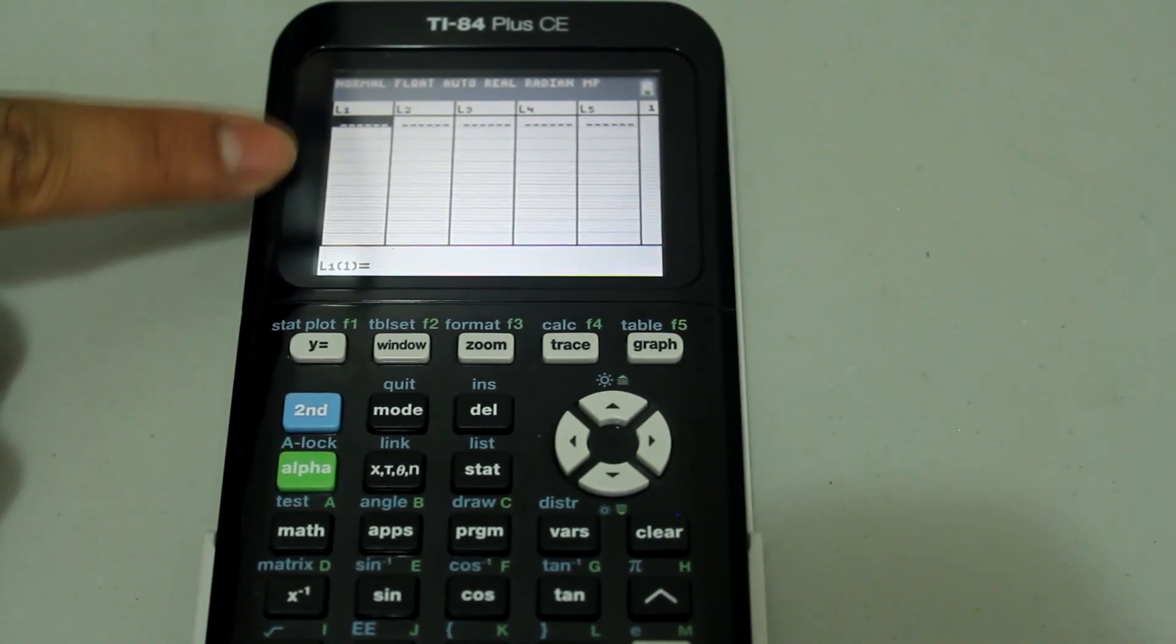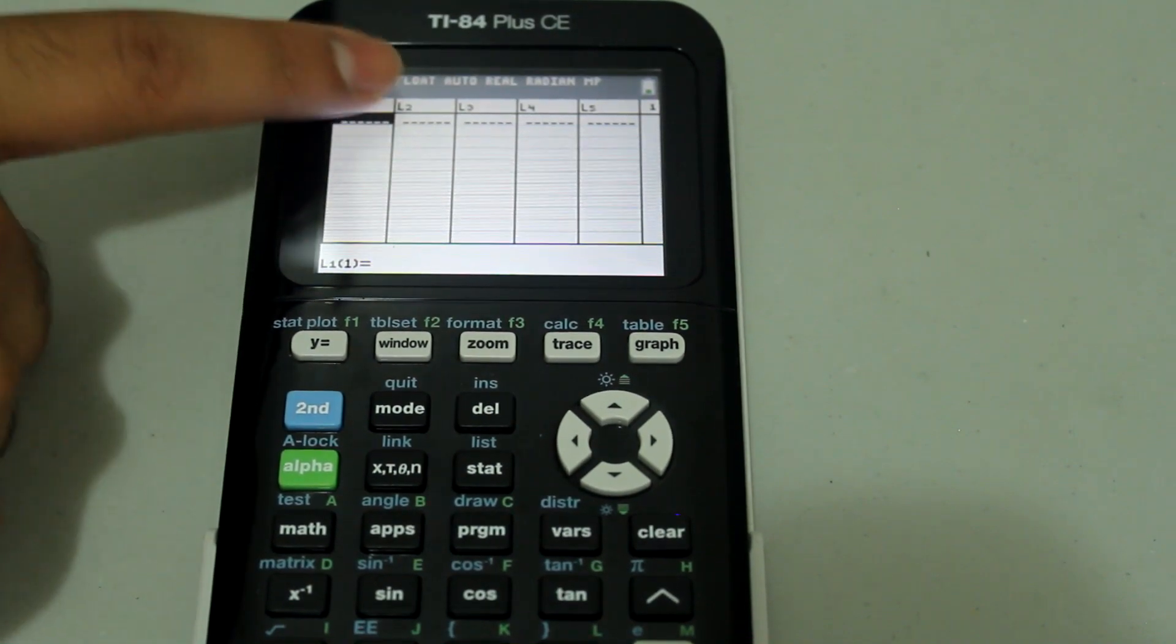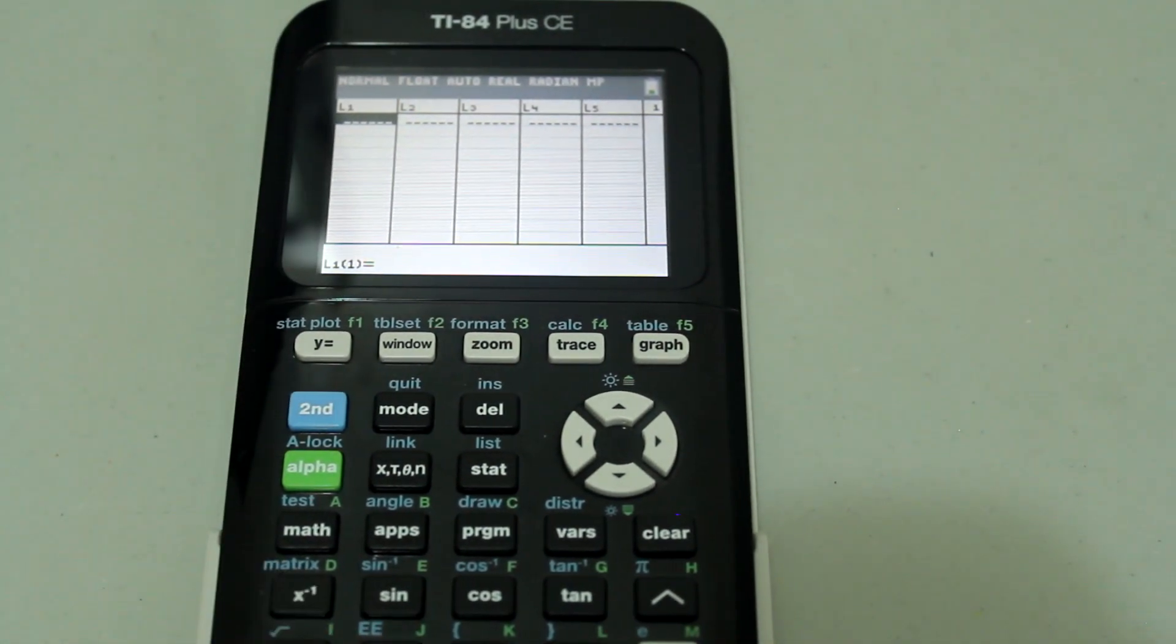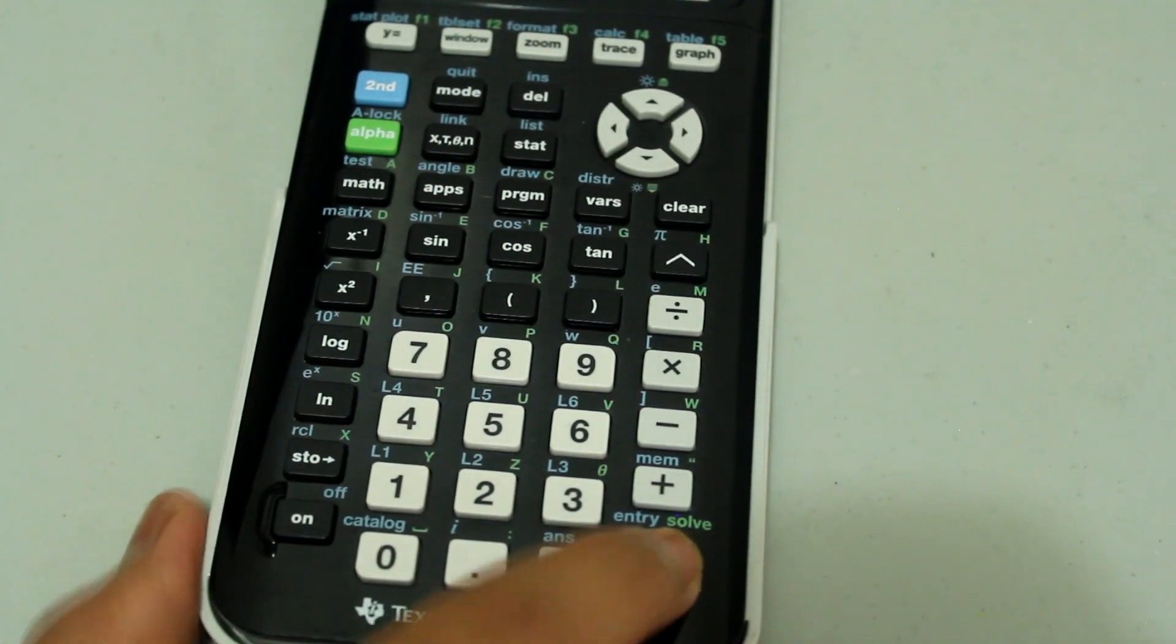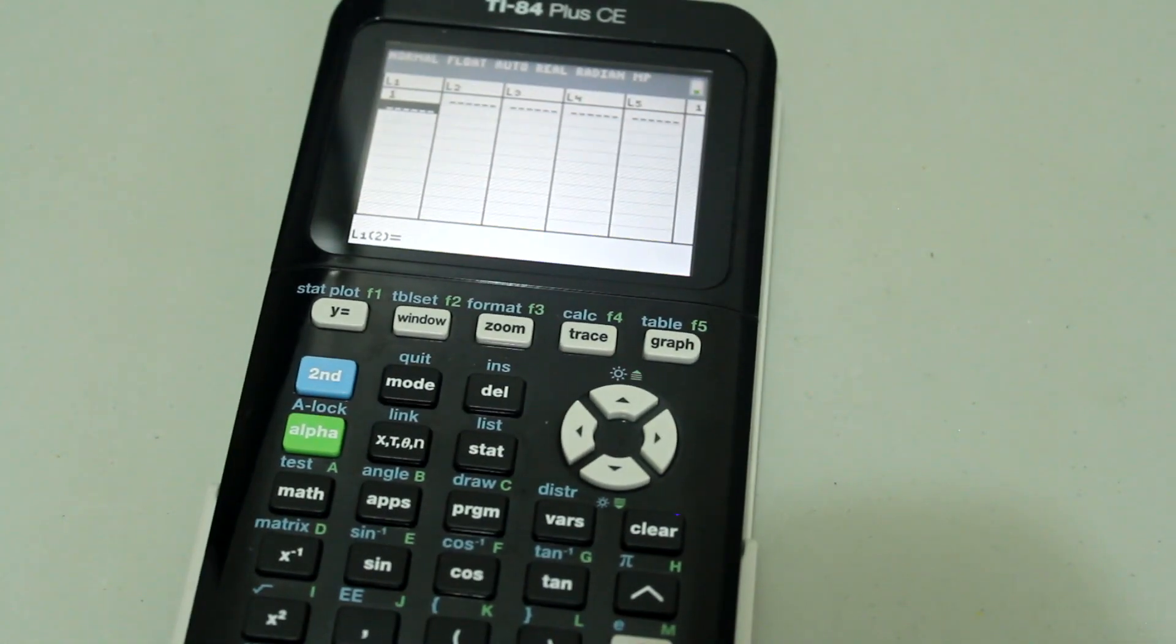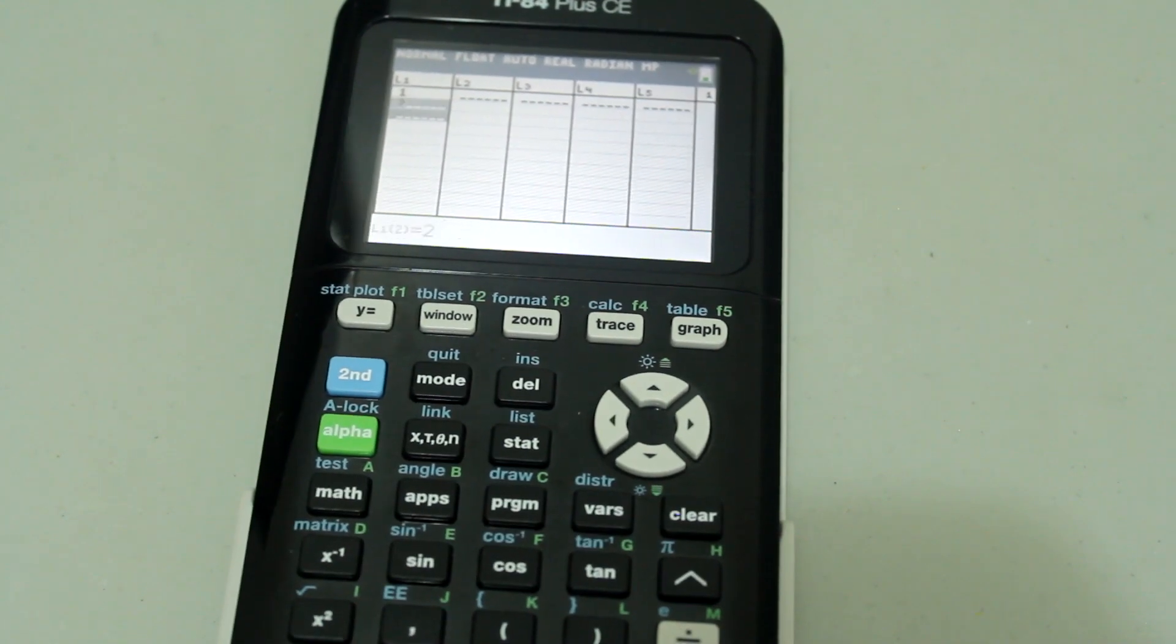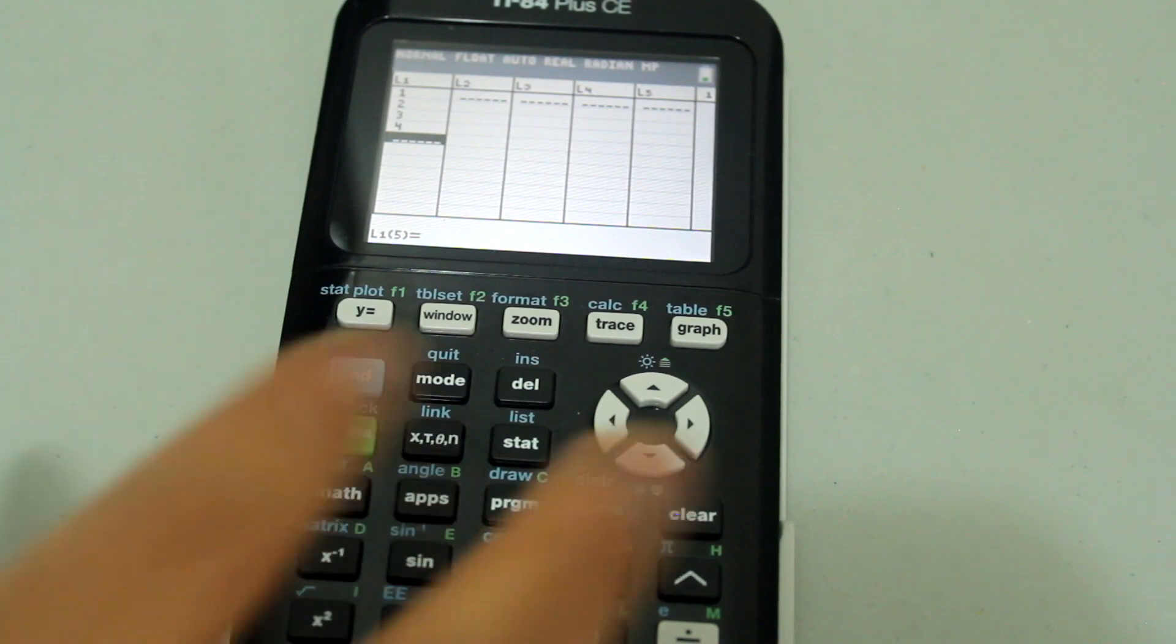So under L1 I'm going to type in positive values and under L2 I'm going to type in negative values. So I'm going to press 1 and then enter and I'm going to do that for the rest as well: 2, 3, 4.